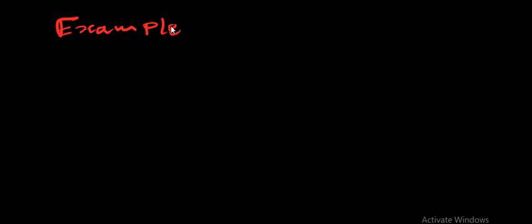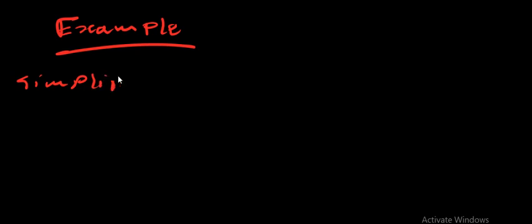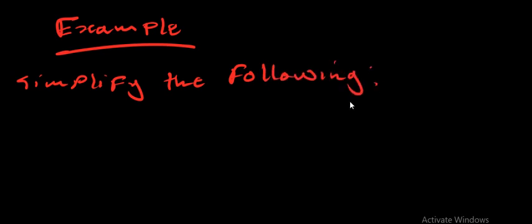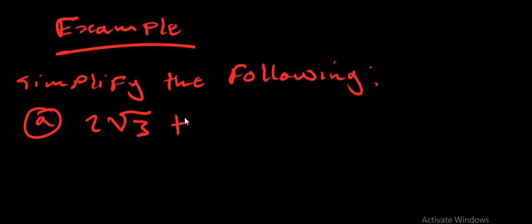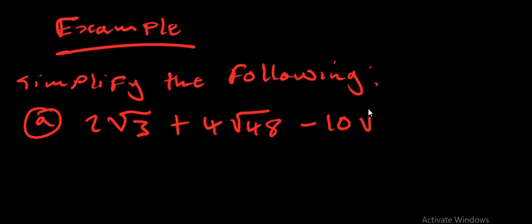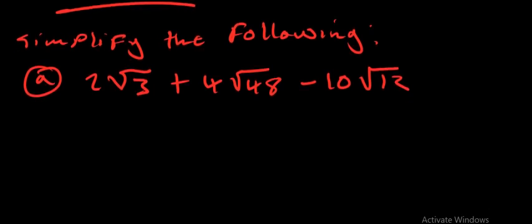The first example comes from an exam question. Simplify the following: 2√3 + 4√48 − 10√12.